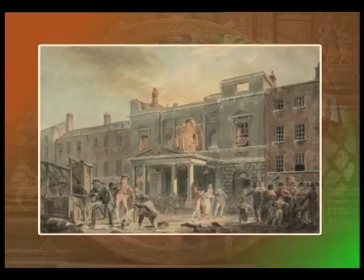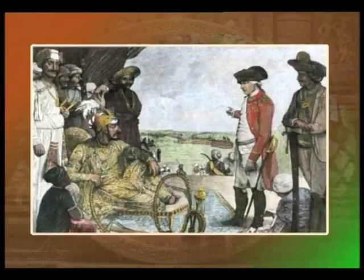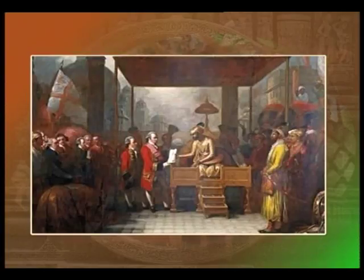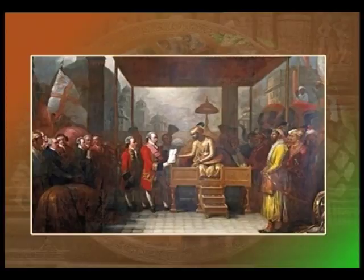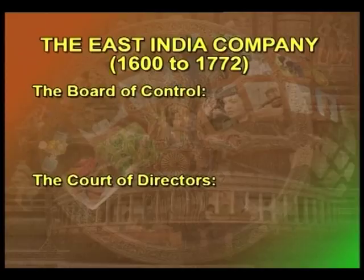Between 1600 and 1765, the company chiefly remained a trading corporation whose charter was renewed by the Crown from time to time. The year 1765 is an important landmark year for the East India Company, when the Mughal ruler, though reduced into a titular head with diminished authority, gave the East India Company a charter making it the Diwan of Bengal — in other words, it became the administrator of Bengal. The company had two controlling authorities: the Board of Control and the Court of Directors.